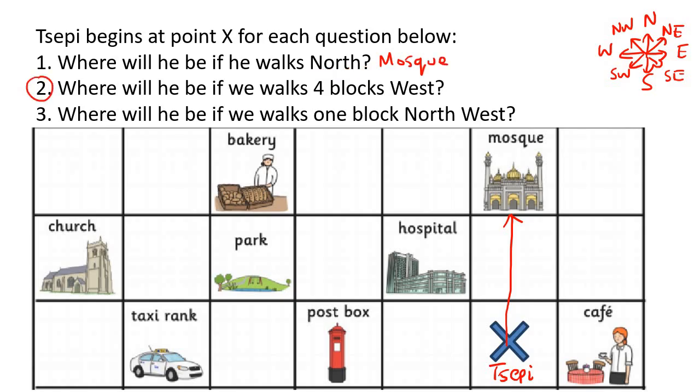Number two. Where will he be if he walks four blocks west? Now, west means to the left. So we're going to go one, two, three, four. Taxi rank. Taxi rank.